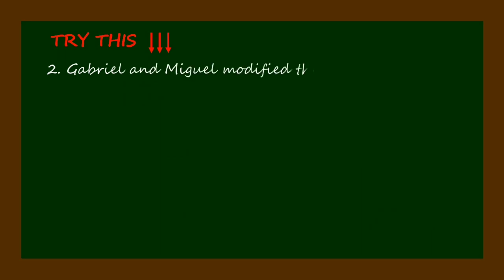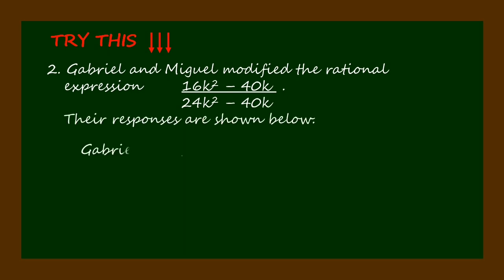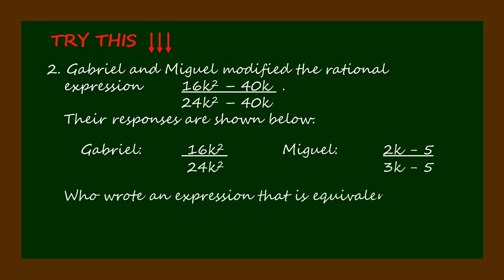Number 2: Gabriel and Miguel modified the rational expression (16k² - 40k)/(24k² - 40k). Their responses are shown below. Gabriel wrote 16k²/24k². Miguel wrote (2k - 5)/(3k - 5). Who wrote an expression that is equivalent to the original expression?